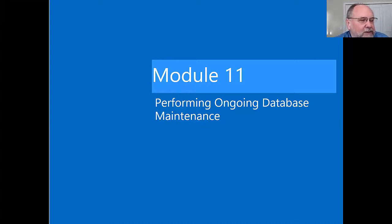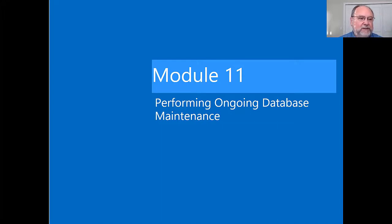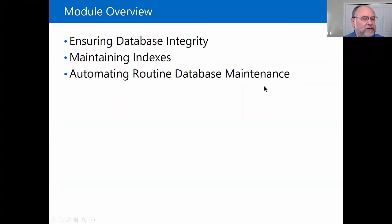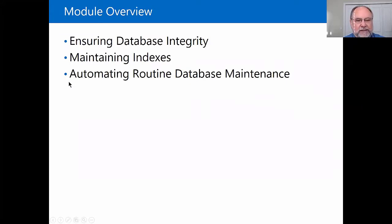We're going to start on module 11, called performing ongoing database maintenance. It boils down to three different subjects that didn't really fit anywhere else — they're not all that connected, but they're really important topics. We're going to talk about database integrity, indexing, and maintenance plans.